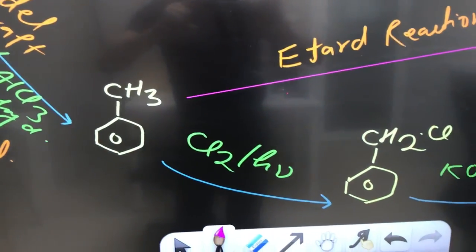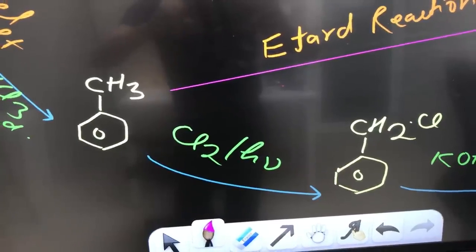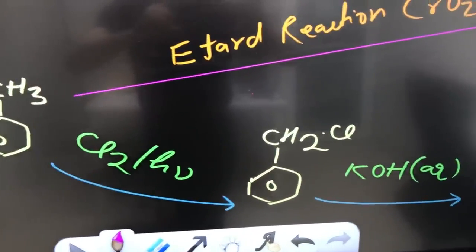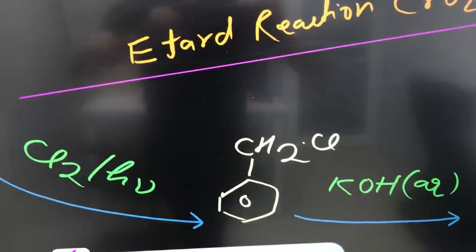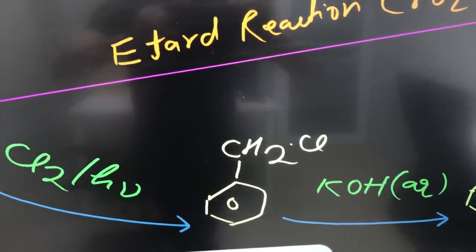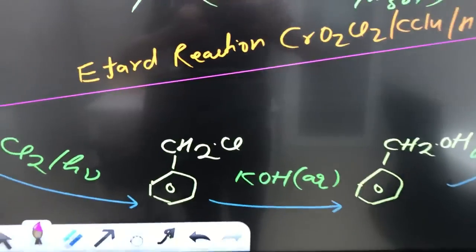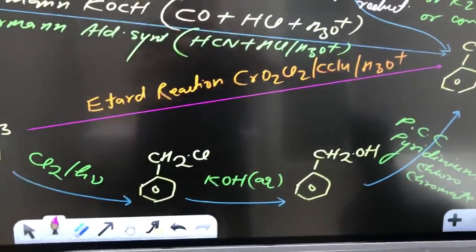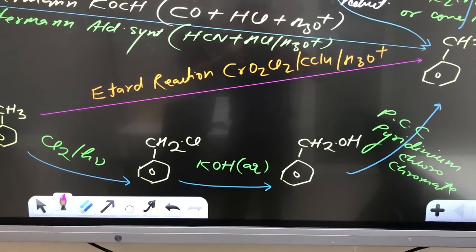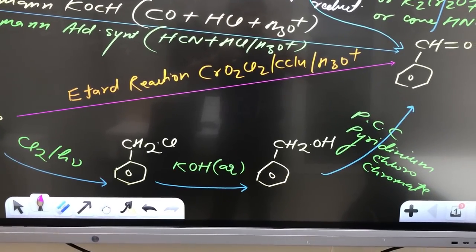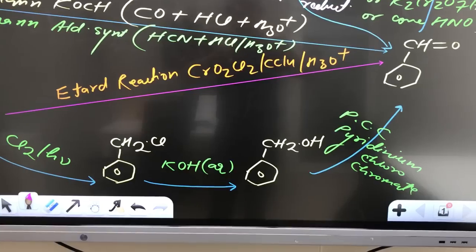And now when this toluene reacts with Cl2/hν, this reaction is free radical substitution reaction. It will give you benzyl chloride. Now when this benzyl chloride reacts with KOH aqueous, it is going to give you benzyl alcohol.